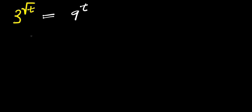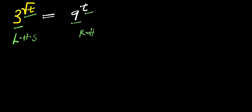Hello. How to solve this exponential problem? This is 3 to the power of root t, and this equals 9 to the power of t. We are solving for all the values of t that will satisfy this equation — the value of t that will make the left-hand side the same as the right-hand side. It might be 1, it might be other values. So let's find out.